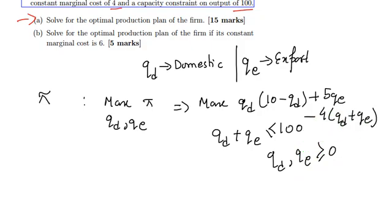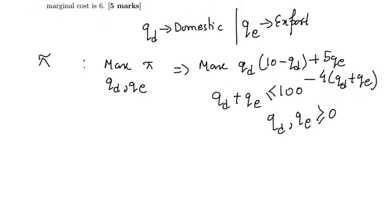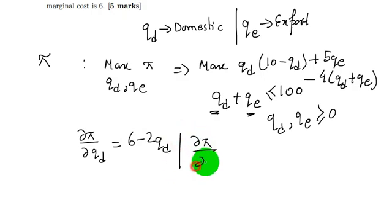Now in order to find our answer, we will first differentiate the objective π with respect to both qd and qe to get the marginal profits. Therefore ∂π/∂qd = 6 - 2qd and ∂π/∂qe = 1.